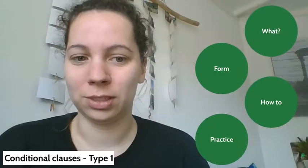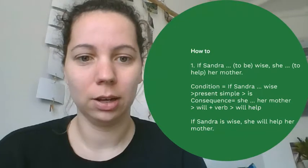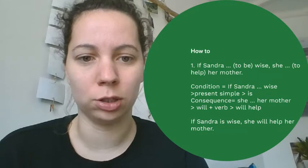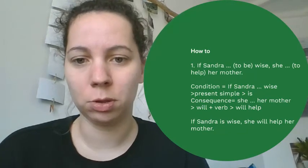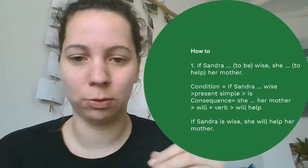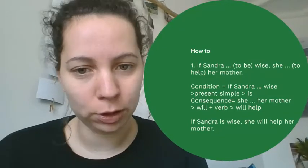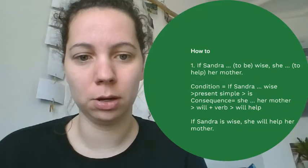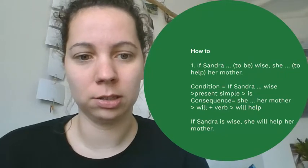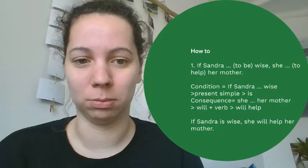Let's do one together so I can show you how it works. You'll often get something like: 'If Sandra [blank] why, she [blank] her mother.' The assignment says to use type one. Step one: find which part is the condition and which is the consequence. The condition part is 'if Sandra [blank] why' because it starts with 'if.' The other part, 'she [blank] her mother,' is the consequence.